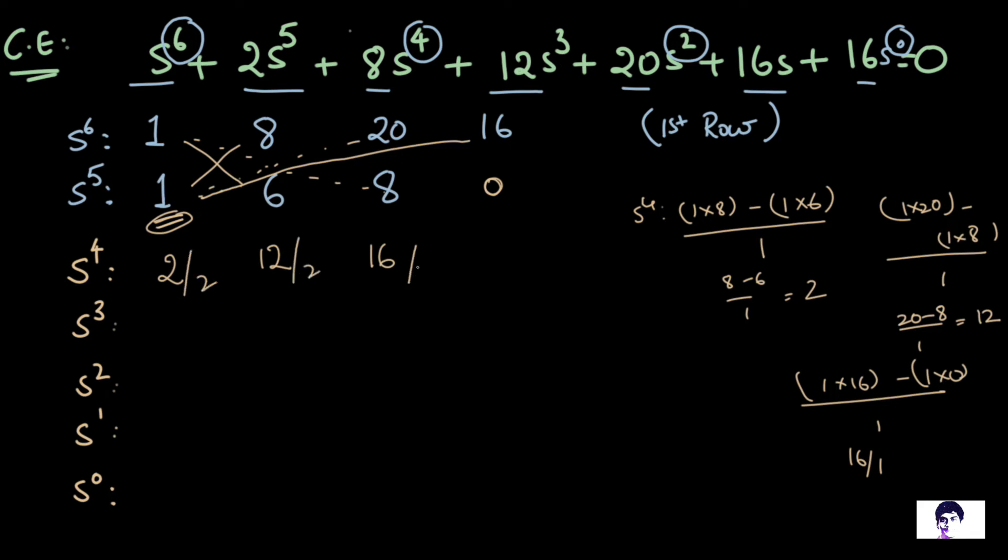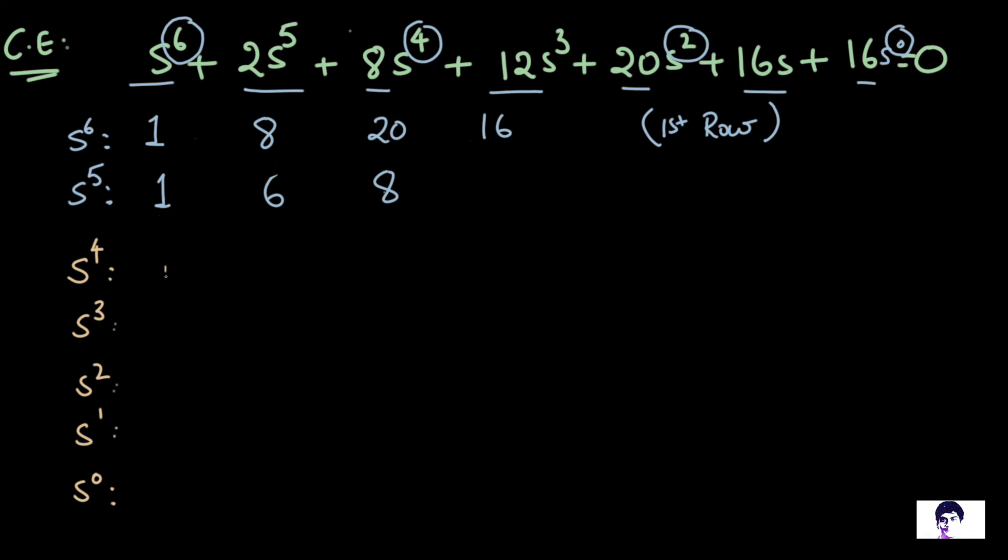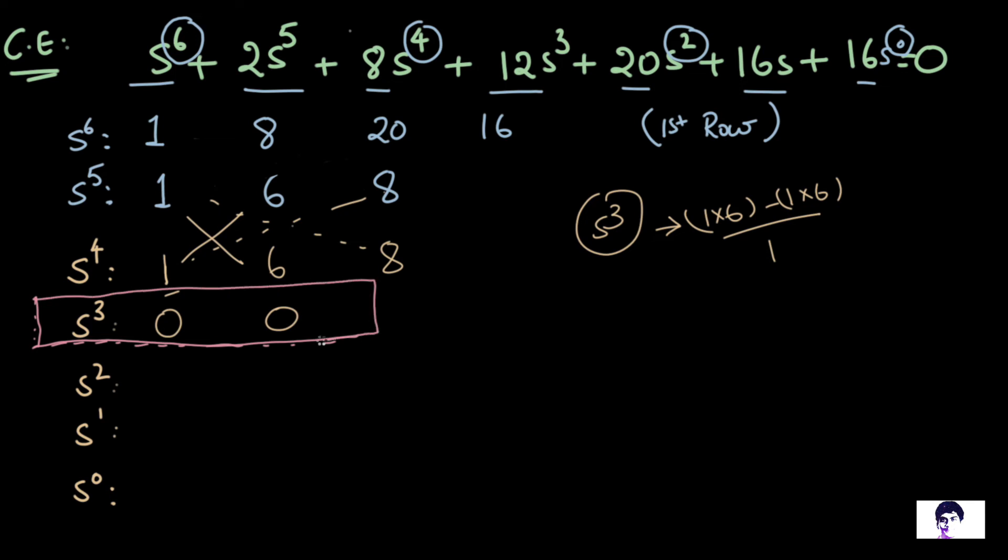And for ease of my calculations, which I'm going to do further, I'm going to divide the entire row by 2, which is its GCD. So that would give me 1, 6, and 8. So now to find out the elements of S^3, we are going to do 1 into 6 minus 1 into 6 by 1, that is the first element. And 1 into 8 minus 1 into 8 by 1 is the second element. So both these elements have turned out to be zeros. So we have what is commonly referred to as a row of zeros. Now, how do we proceed in cases like this? Because we know that division by zero is undefined.